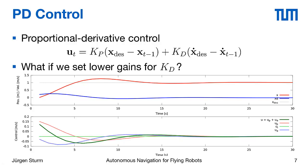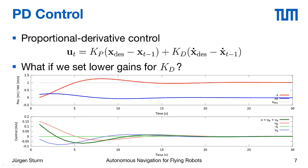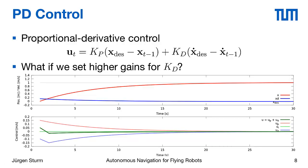You might wonder what would happen if we set lower gains for this differential part. Then we get again this behavior that we have seen before. The red line overshoots to our desired location because the slowing down is not strong enough. On the other hand if we set higher gains for the differential part, it still approaches the desired location nicely but it takes extremely long like 25 seconds in this example. This kd can also lead to a slower convergence in the end.